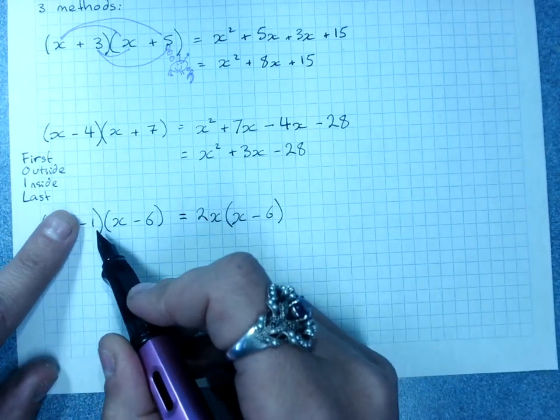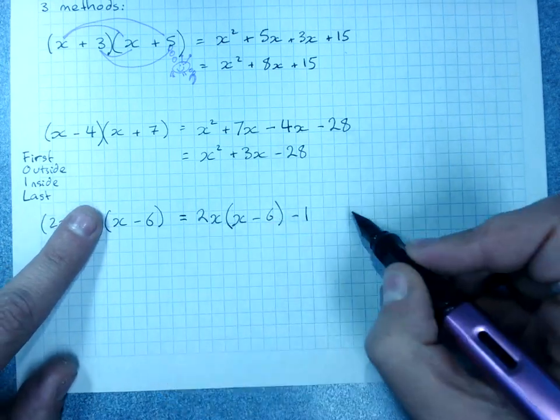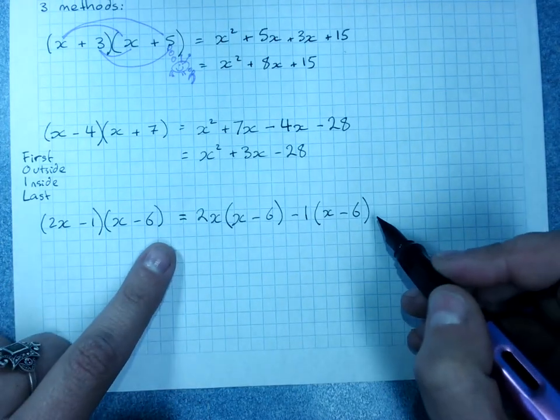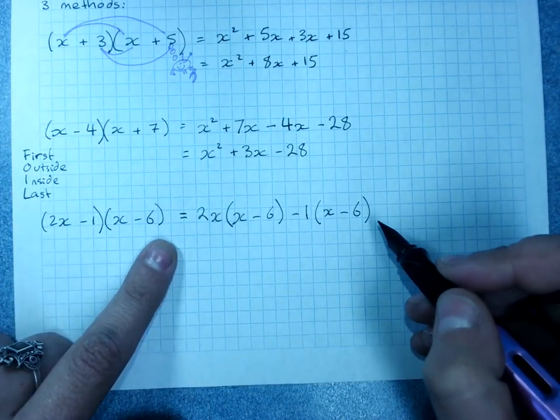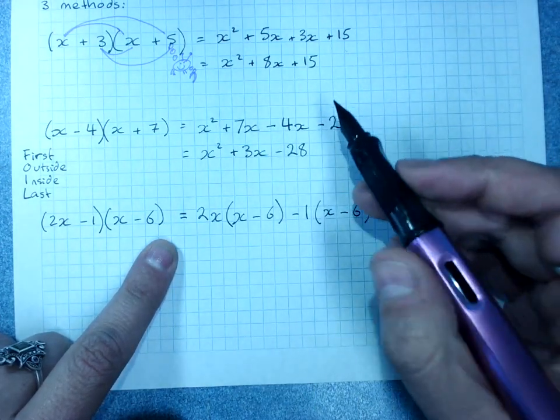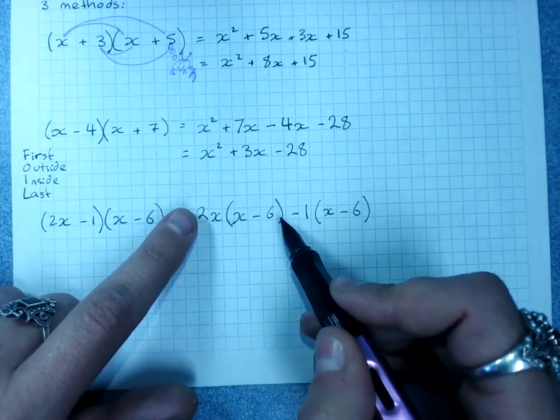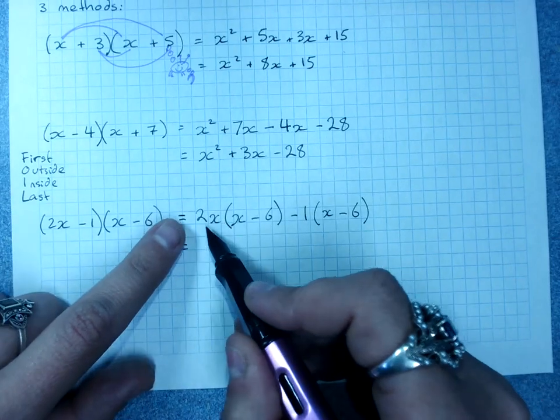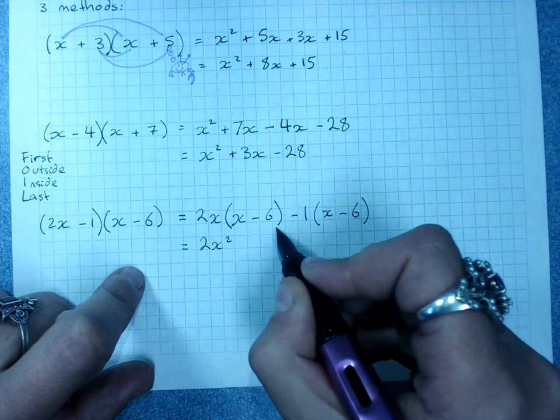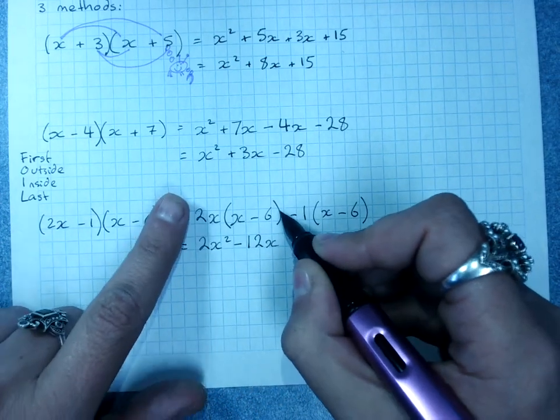That's 2x outside of x minus 6. And then I want to do negative 1 outside of x minus 6. This is a really structured way of setting it out if you tend to forget a particular multiplication because you get a bit lazy. Because all you do now is multiply out this by expanding and this one by expanding. 2x times x is 2x squared. 2x times negative 6 is minus 12x. That expansion is done.